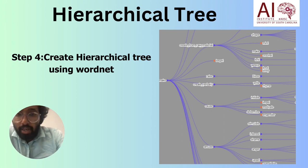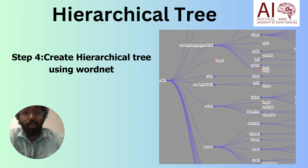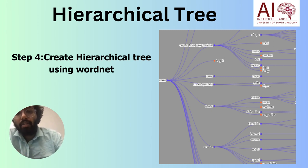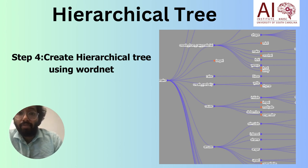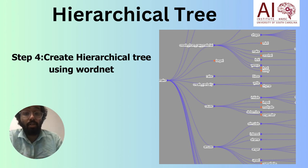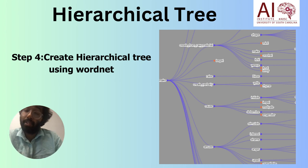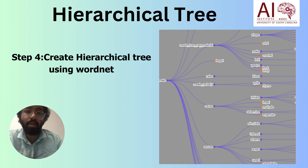We also created a hierarchical tree using ingredients from the Recipe 1M dataset for hierarchical classification. For example, if the model cannot differentiate between tuna and salmon, we go one step above in the tree and classify it as fish. If it cannot detect that either, we go one step above and classify it as meat. Another example is classifying red sauce pasta as just pasta.